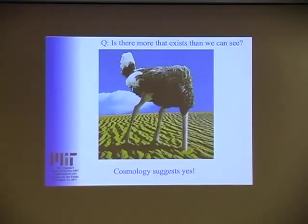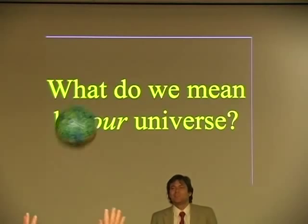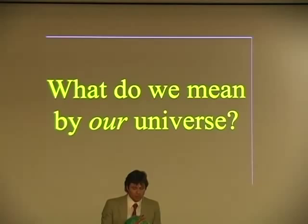In other words, I mean, this ostrich doesn't see everything that exists. Are we maybe making a similar mistake? Well, before talking about parallel universes, we need to be clear on what we mean by our universe. So where is our universe? Right here. All right. Perfect. So this is what we usually mean when we talk about our universe. It contains all the space that we can see, even in principle. This is the spherical region of space from which light has had time to get here so far, during these 13.7 billion years.